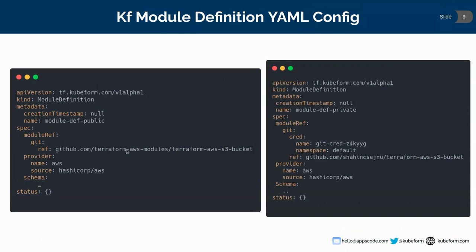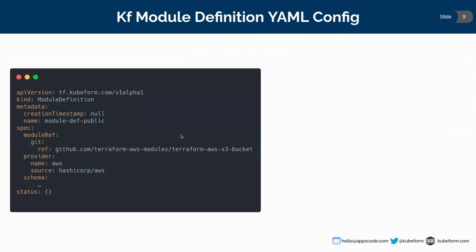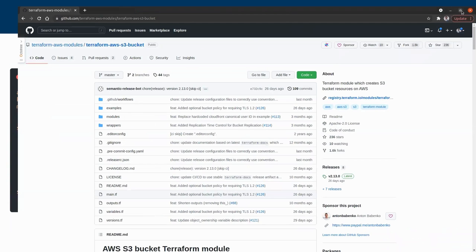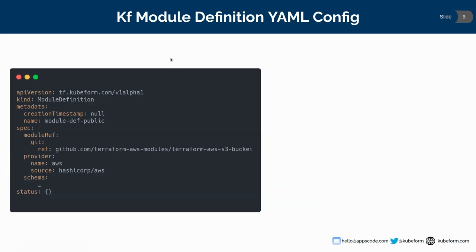The QForm module definition basically reads from a GitHub repo where the module definitions are stored. For example, there is terraform-aws-modules/terraform-aws-s3-bucket stored in a repository. You can see main.tf, outputs, variables, and versions — these files are compulsory for any Terraform modules. By reading those files, the QForm CLI generates our QForm module definition. Here you can see the fields in the schema — I've squeezed it a bit but will show the full version in our repository.